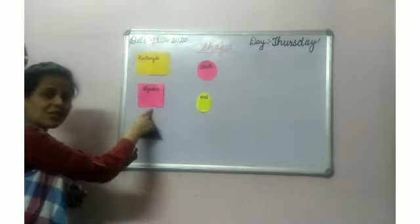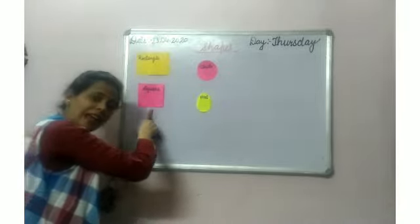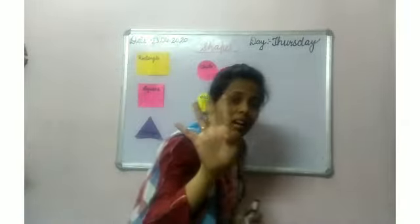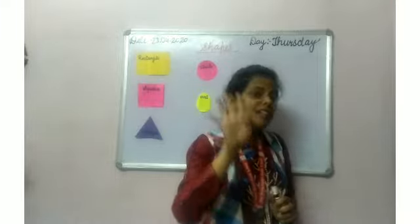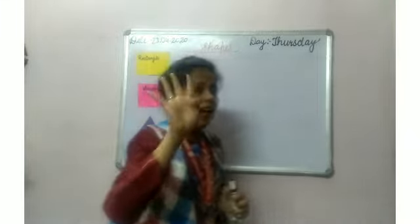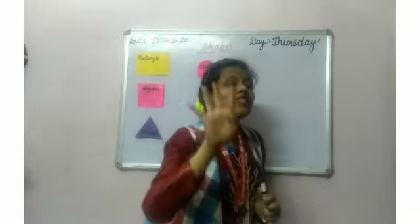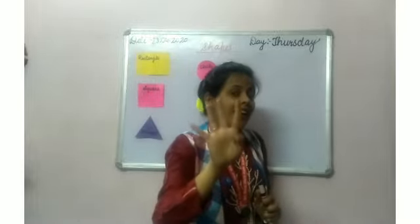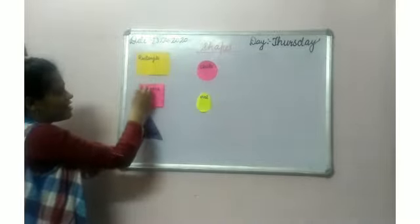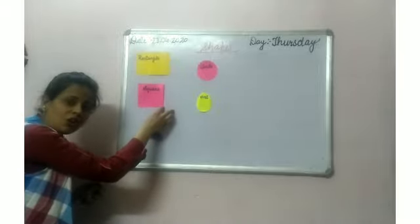Come on to the square. How many sides does a square have? 4 sides. A square has 4 sides. And how many corners does a square have? A square has 4 corners — 1, 2, 3, 4.